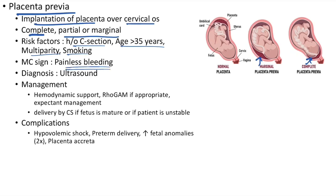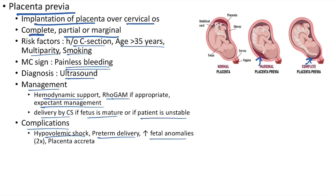Diagnosis of placenta previa is by ultrasound. Management: hemodynamic support, Rhogam for Rh-negative mothers, expectant management; delivery by cesarean section if fetus is mature or patient is unstable. Complications: hypovolemic shock, preterm delivery, increased fetal anomalies (2× normal), and placenta accreta.